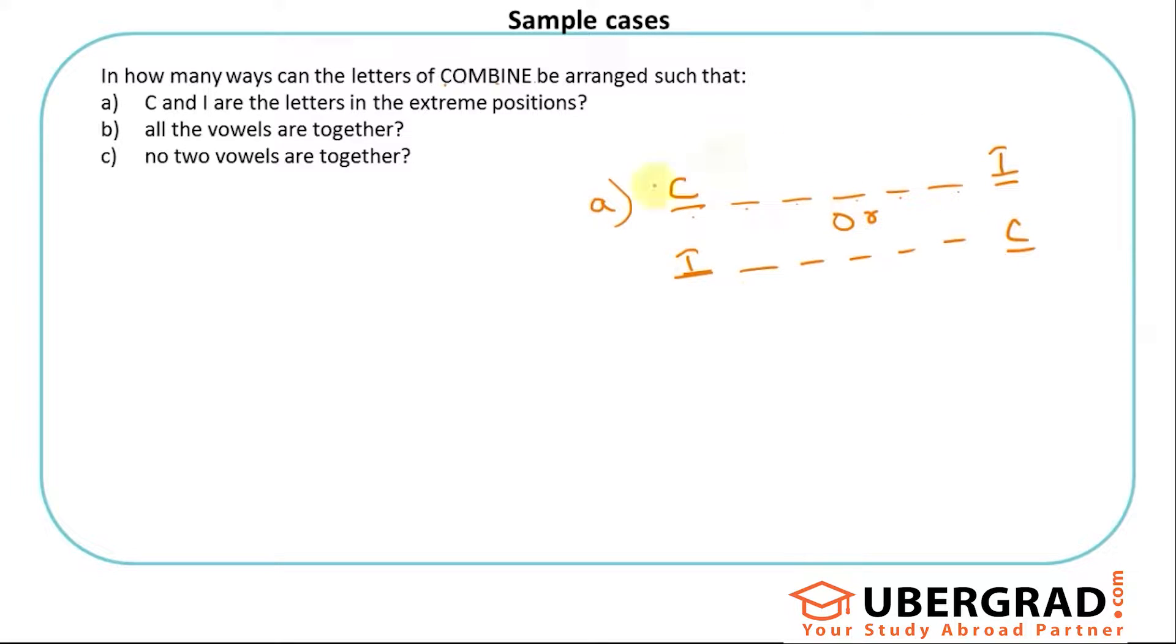Now if C and I are here, how many options do you have for this blank? I cannot use C and I. I can use O M B N E. That's 5 options, 4, 3, 2, 1. 5 into 4 into 3 into 2 into 1 is 5 factorial for this case. Similarly I is fixed here, C is fixed here. So I have 5 options, 4 options, 3, 2, 1. Again 5 factorial. So the answer will be 5 factorial plus 5 factorial. 5 factorial is 120. So plus 120 is 240, the number of words I can make for this.